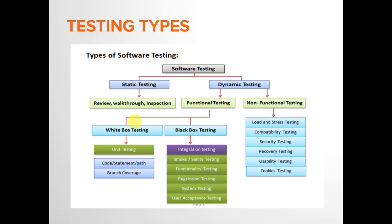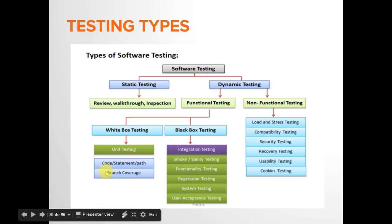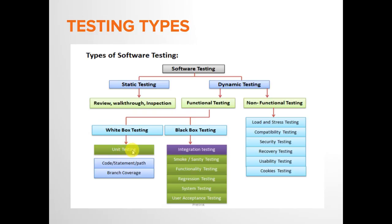White box testing is also called glass box testing or open box testing, because the tester has to deal with the coding steps — checking how the coding works, how the input is processed, and the output. The method of performing white box testing is unit testing, where code statement, path, and branch coverages are done. It is essentially a process of code review and maintenance.